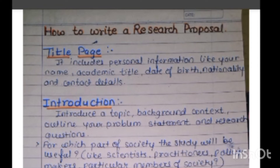Now, how to write a research proposal. First of all, you will start with the title page. You will include your name, and the academic title — 'A study of' or 'A study on' — whatever you want to study will remain the title. After that, date of birth and nationality are not so important, but contact details and email ID are required. The name of the university where you are submitting the proposal should be included. On the left-hand side, the research student, and on the right-hand side, the research guide — you should mention space for their signatures.